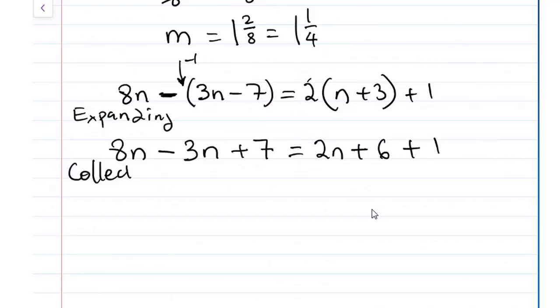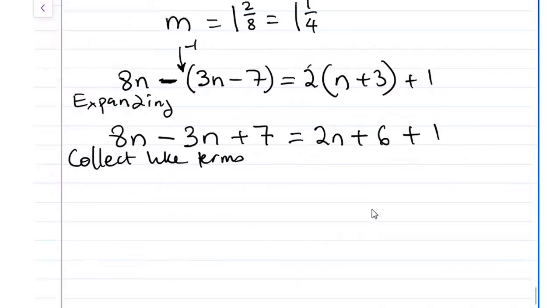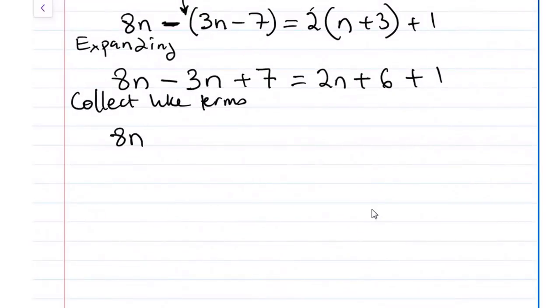The same thing here. We want to collect like terms. And remove 2n on the other side. So we have 8n minus 3n minus 2n plus 7 equals to 2n minus 2n plus 6 plus 1. So this will give us 8n minus 5n plus 7 equals to 7. And this will be 3n equals to 0.